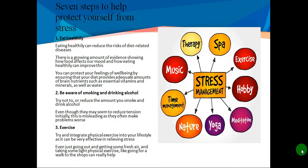You can protect your feelings of well-being by ensuring that your diet provides adequate amounts of brain nutrients such as essential vitamins and minerals, as well as water. Step two: Be aware of smoking and drinking alcohol. Try not to, or reduce the amount you smoke and drink. Even though they may seem to reduce tension initially, this is misleading and they often make problems worse.